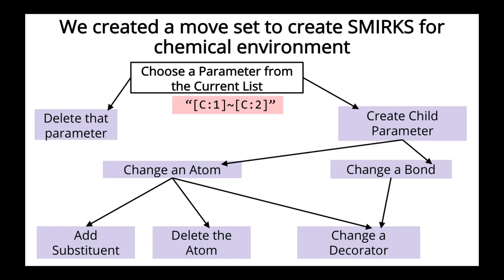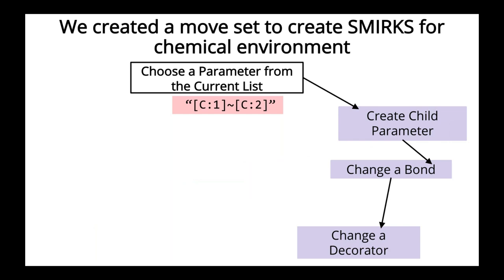So in this case, that's any bond between two carbons. So since there's only one item in my list, I can't delete that parameter, or the list would be empty. So if we're going to create a child parameter, we could imagine that we're going to change the bond, so the bond between those two atoms. We could say, let's try switching that any bond to an aromatic bond. So instead of replacing that SMIRNOFF pattern in the list, a new one gets added. So now instead of having one parameter, we have two parameters in our list.